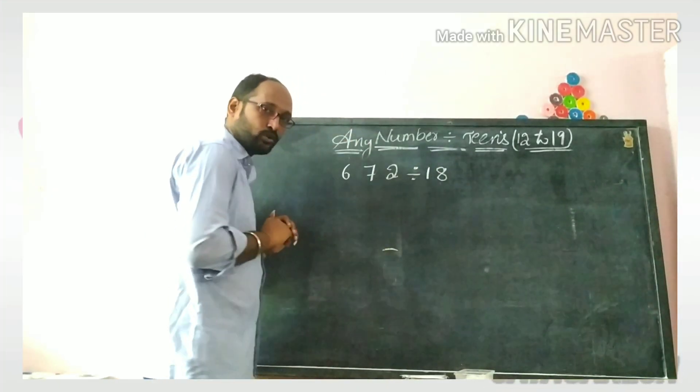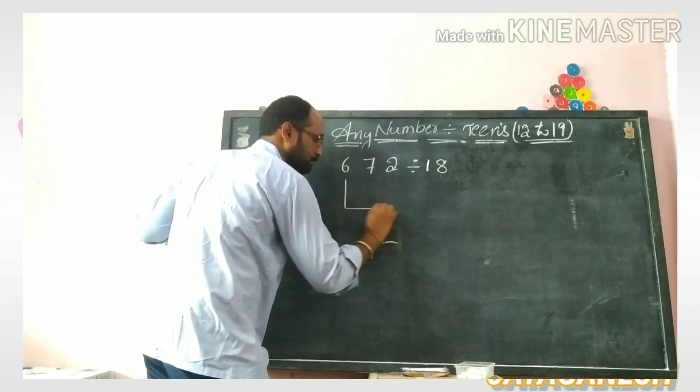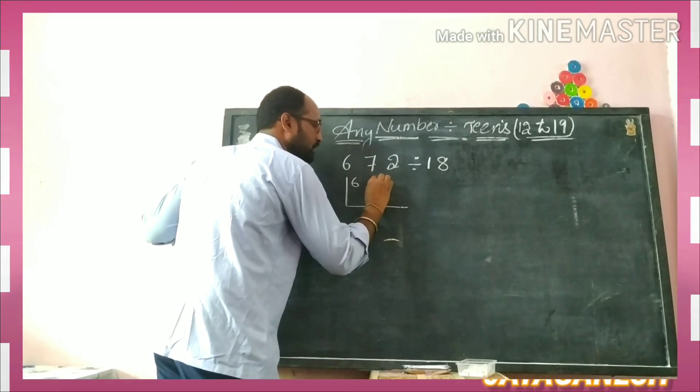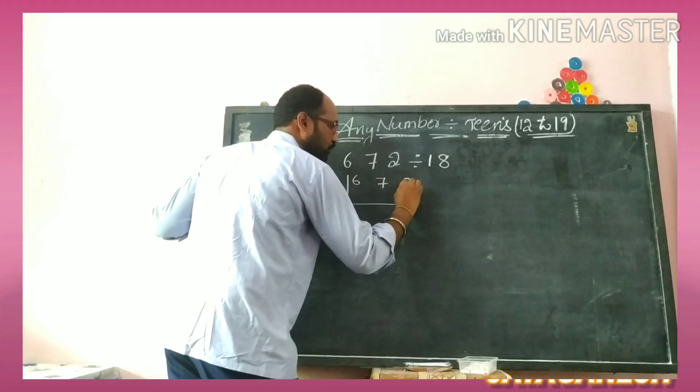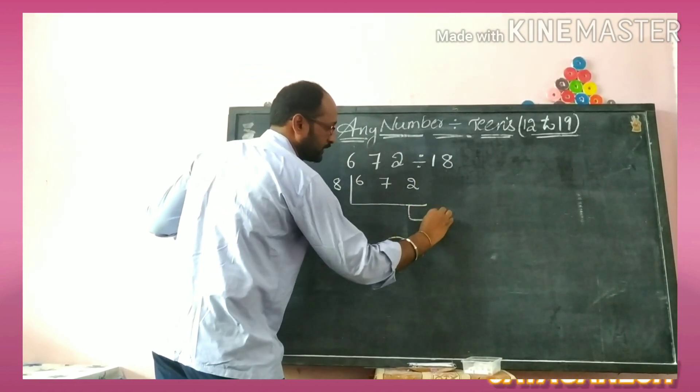Take the LCM bracket and write 6 here, 7 and 2. Here 8 is there, you are writing it here, and we are taking this as our remainder.